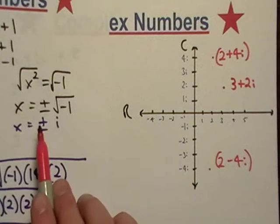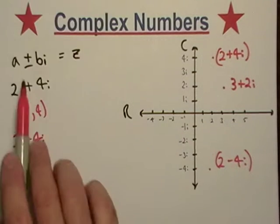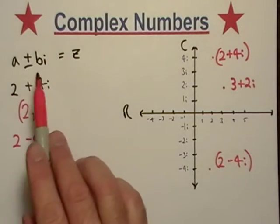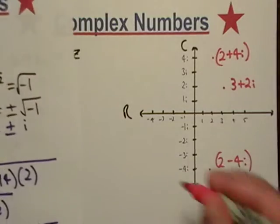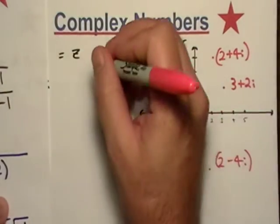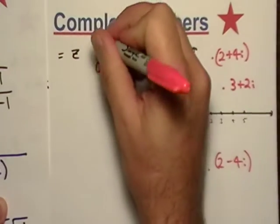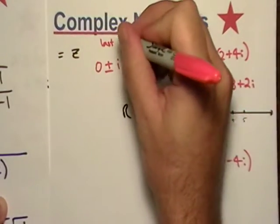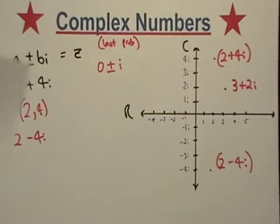The actual proper way to write this is we need an a plus bi form, so what we're just going to call this is 0 plus or minus i. That's from the last problem.